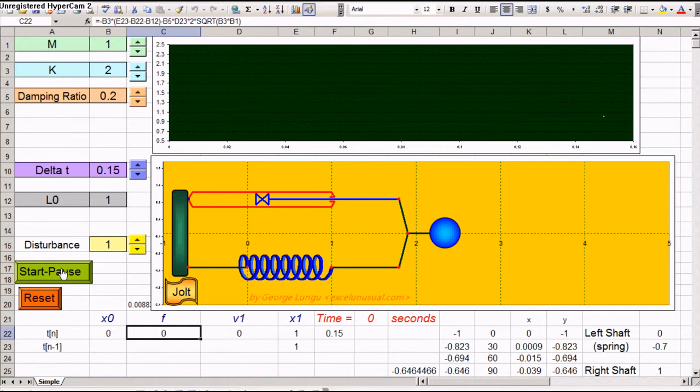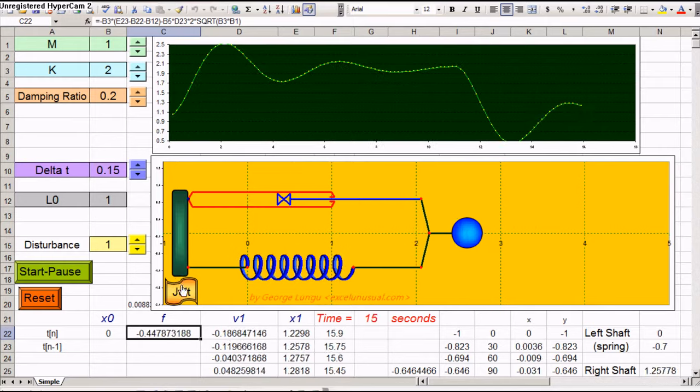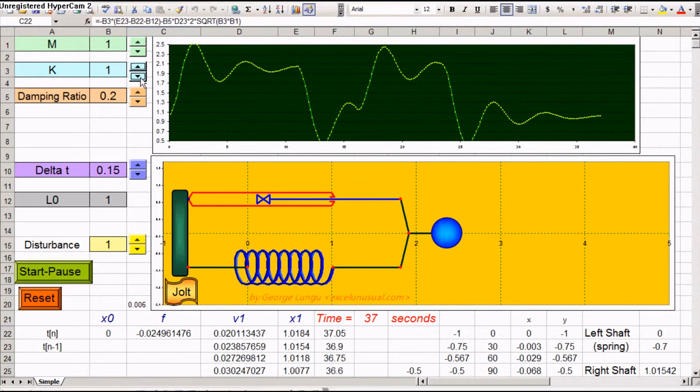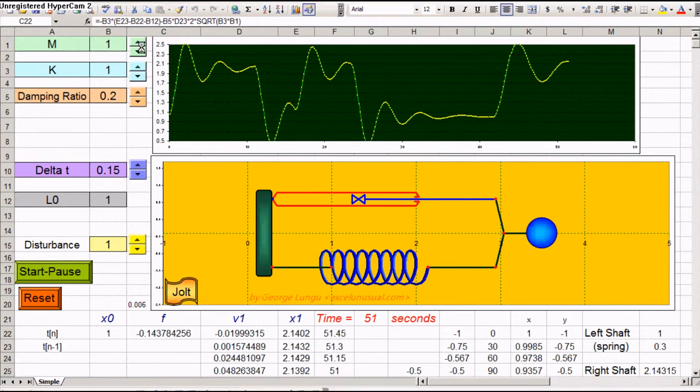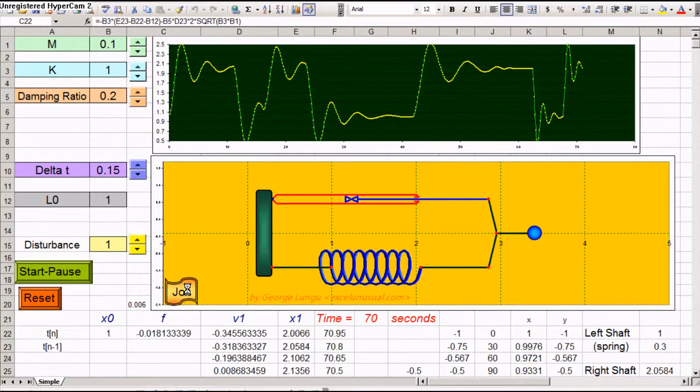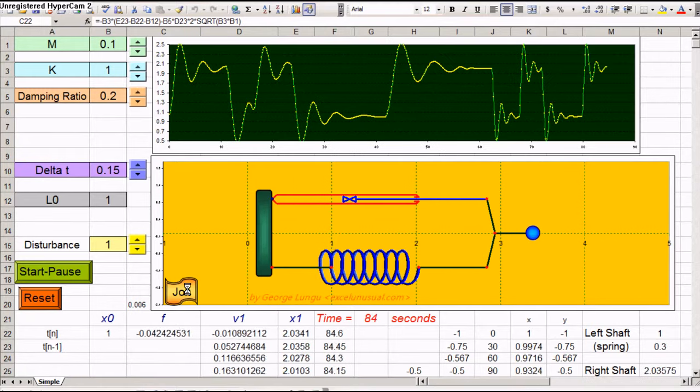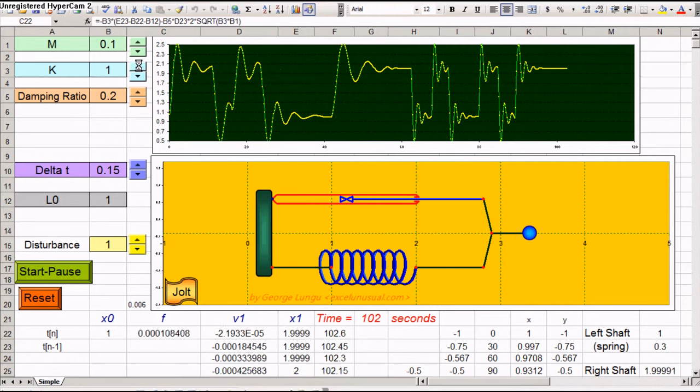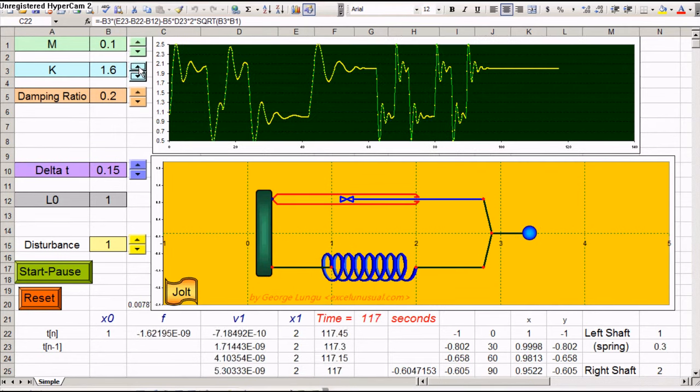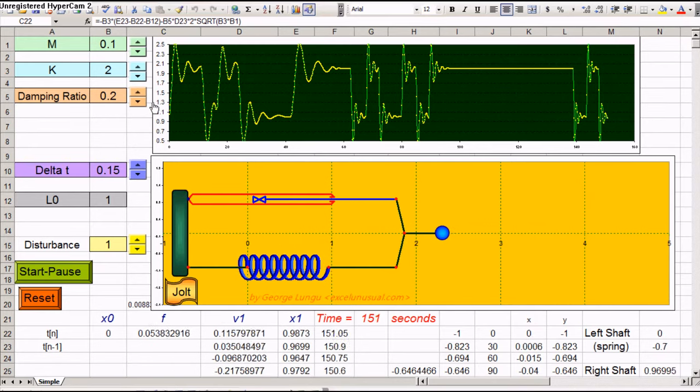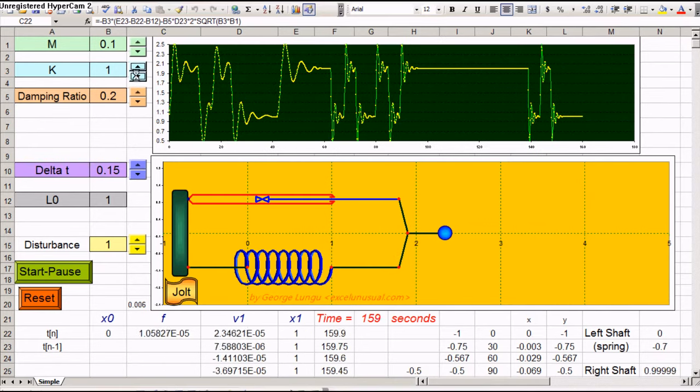We can reset it from here and start it again. While it's running, during the run, we can change, say, the constant of the spring. We can change the mass. If we change the mass, the system becomes much faster. Similar effect we can get by increasing the constant of the spring, the elastic constant. And let's decrease it again, back.